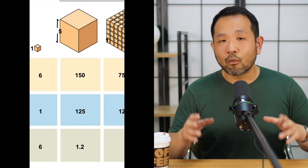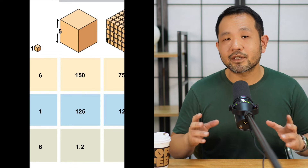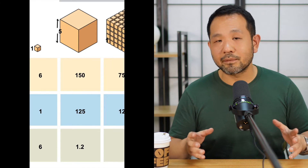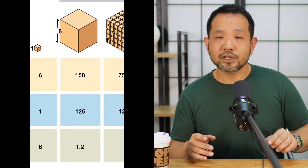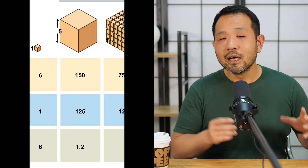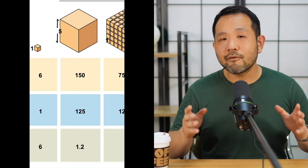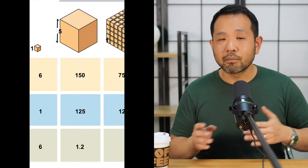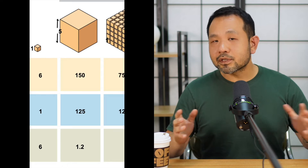If we make that cube a little bit bigger to five by five by five centimeters, here's what happens. One side of that cube has a surface area of 25 centimeters squared. Multiply that by six, you get 150 centimeters squared. However, the volume — which is now five times five times five — gives you 125 cubic centimeters, giving you an effective surface area to volume ratio of 1.2. So the absolute surface area has increased, but the volume has increased at a greater rate, and as a result the total surface area to volume ratio has decreased.